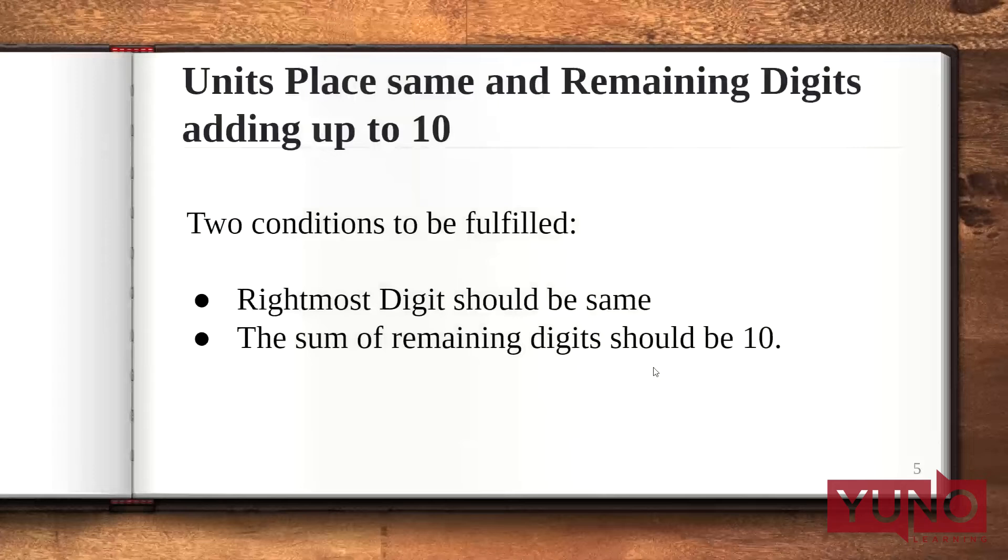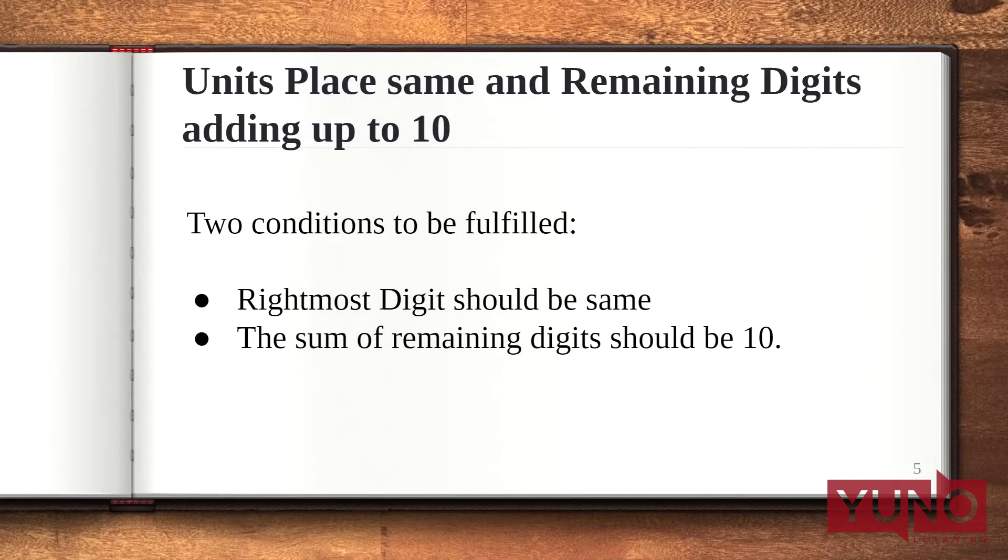Now let's see another case, that is units place same and remaining digits adding up to 10. Now here also there is a need to be fulfilled of two conditions. The first is the rightmost digits should be same and the remaining digits should be a sum of 10. It is just the opposite of the first case.